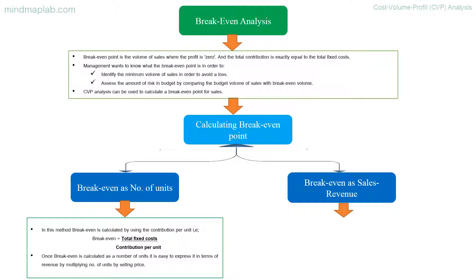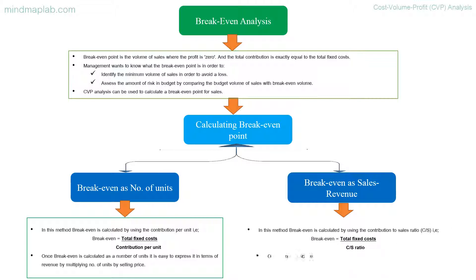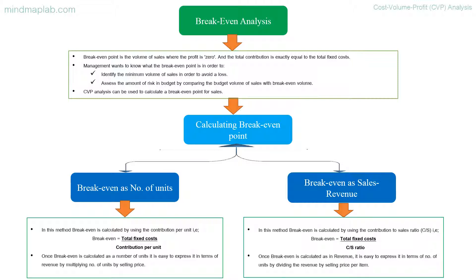Break-even as sales revenue: in this method, break-even is calculated using the contribution to sales (CS) ratio — break-even equals total fixed costs divided by the CS ratio. Once calculated as revenue, it is easy to express in terms of number of units by dividing the revenue by selling price per unit.